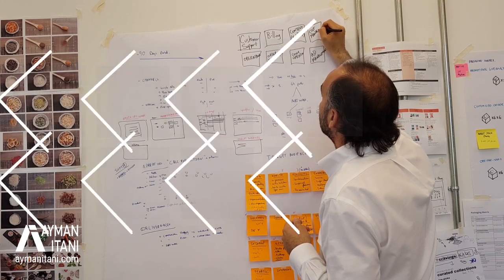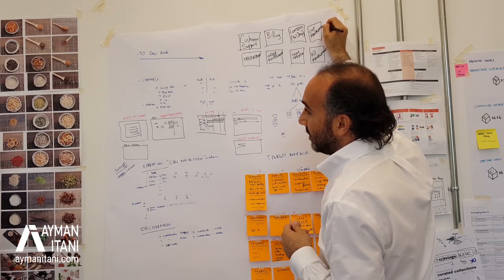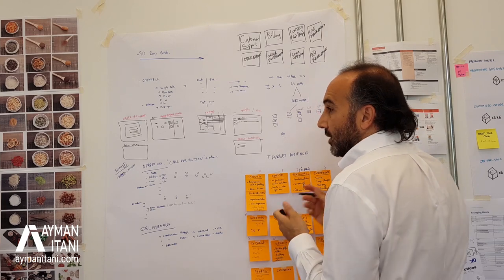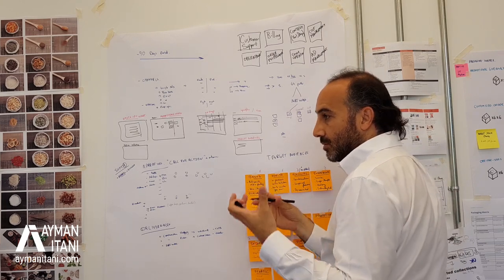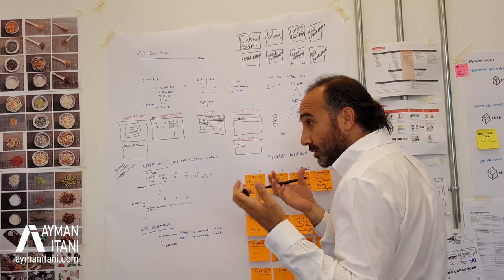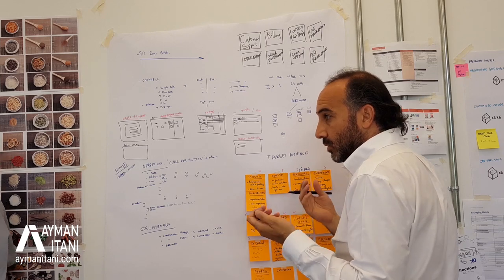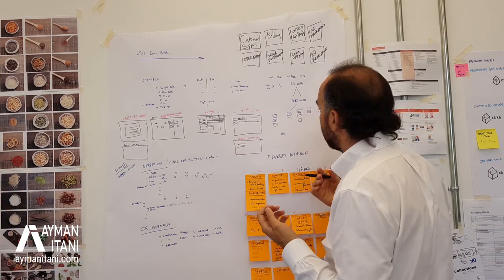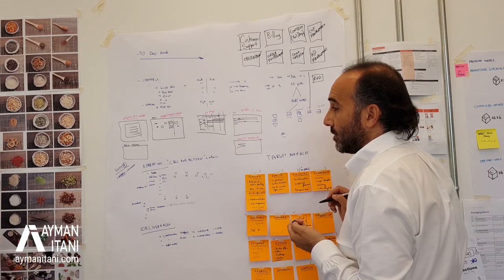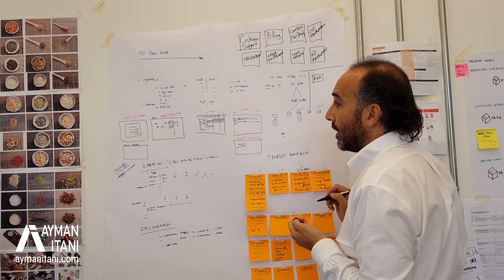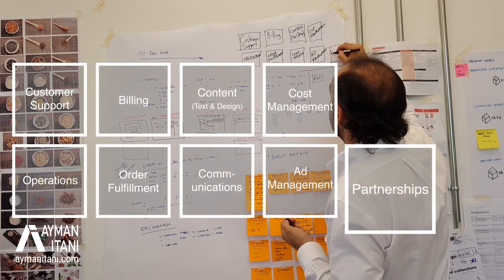Somebody needs to look at this — are we selling this for 30 dirhams, are we making 2 dirhams or 18 like we thought? Then you have all the offline stuff, which is separate. If you have distribution, you're also looking at partnerships.